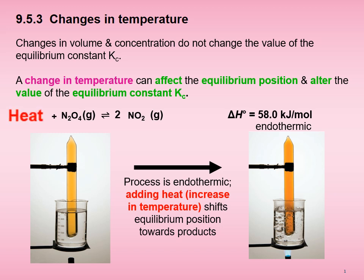Adding heat to the system upsets it, as it has grown accustomed to its cool environment. It wants to get back to a cool environment, so it opposes the change of added heat by subtracting heat. The way it does this is to use up the extra heat to break up bonds in N2O4, forming NO2 in the process. Thus, the position of equilibrium is driven to the right — less N2O4 and more NO2 are present when the new equilibrium is achieved. The Kc value also increases.